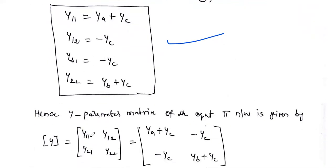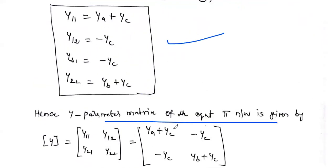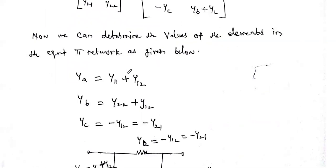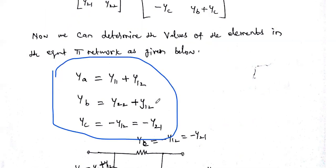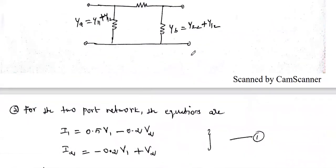The Y-parameter matrix of the equivalent pi network is: Y11 = Y-A + Y-C, Y22 = Y-B + Y-C, and Y12 = Y21 = −Y-C. Rearranging, we can express the pi network elements in terms of the Y-parameters: Y-A = Y11 + Y12, Y-B = Y22 + Y12, and Y-C = −Y12 = −Y21. These are the pi network element values in terms of Y-parameters. If the Y-parameters are given, we can construct the pi network, and vice versa.